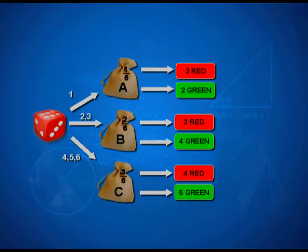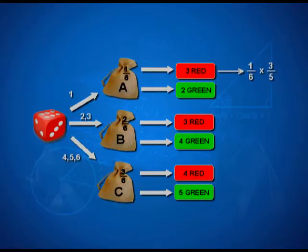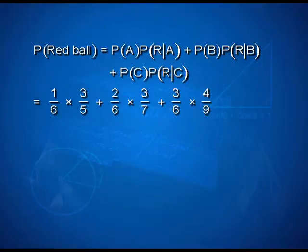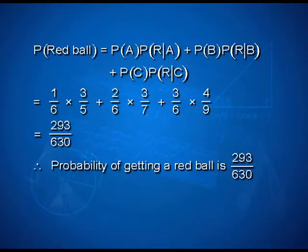The probability of getting a red ball out of bag A is 1/6 × 3/5, where 1/6 is the probability of selecting bag A and 3/5 is the probability of red given bag A was selected. Similarly, the probability of a red ball from bag B is 2/6 × 3/7, and from bag C is 3/6 × 4/9. The total probability of the red ball is computed by plugging in all these values, giving a final answer of 293/630.